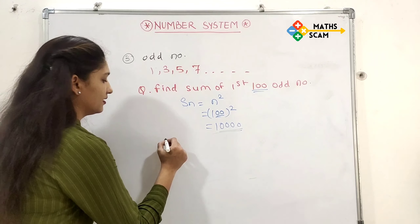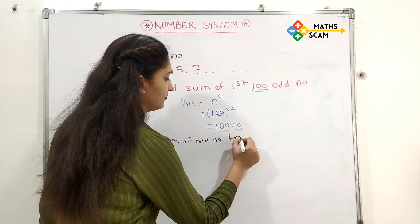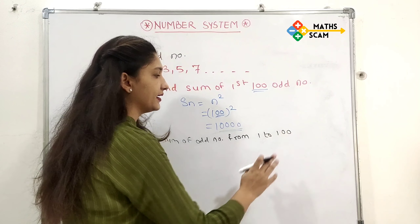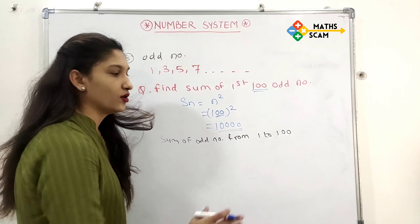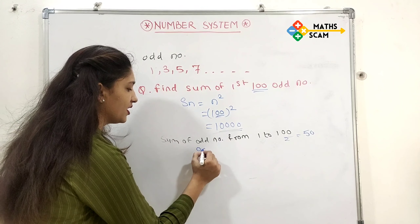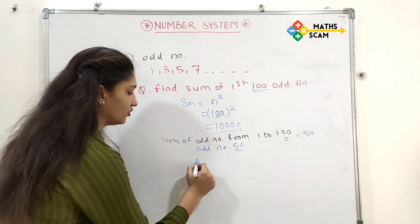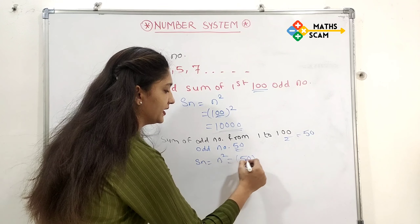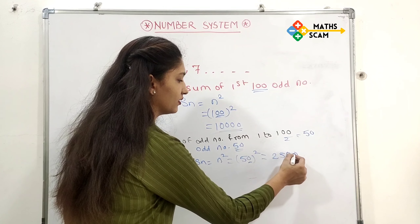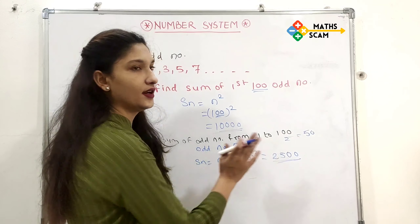If asked for the sum of odd numbers from 1 to 100: how many odd numbers are in 1 to 100? Half of 100 is 50, so there are 50 odd numbers. Therefore n equals 50, and Sn = n squared = 50 squared. 5 squared is 25, and with two zeros doubled it becomes 2500. So the sum of odd numbers from 1 to 100 is 2500.